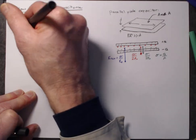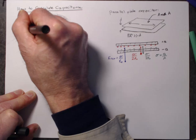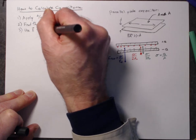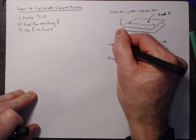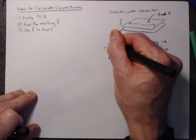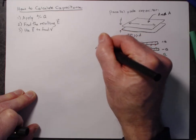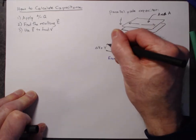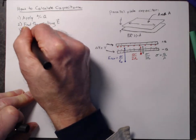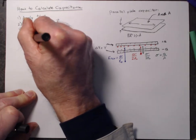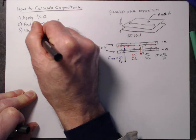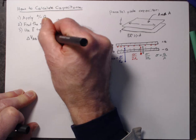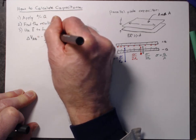Step three is we're going to use that electric field to find the difference in voltage V between the two conductors. So remember, V is a shorthand for the difference in voltage between the two conductors, in this case the top plate and the bottom plate. So we're going to use the equation delta VAB, the difference in voltage between any two points, is minus the integral from A to B of E dotted into dr.